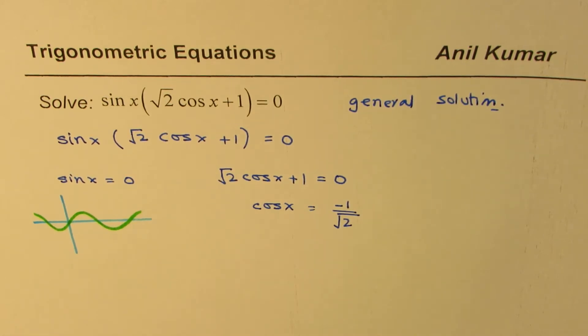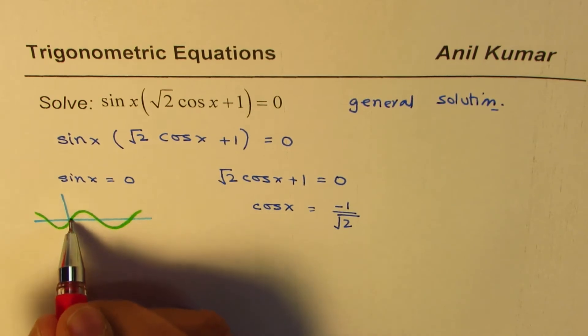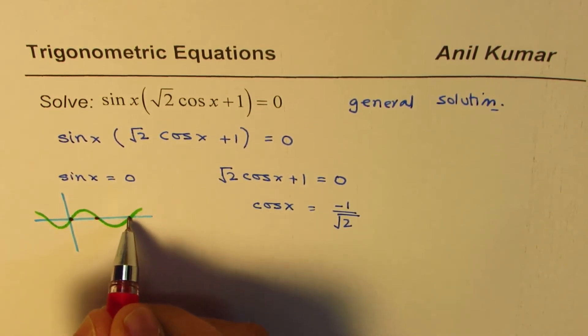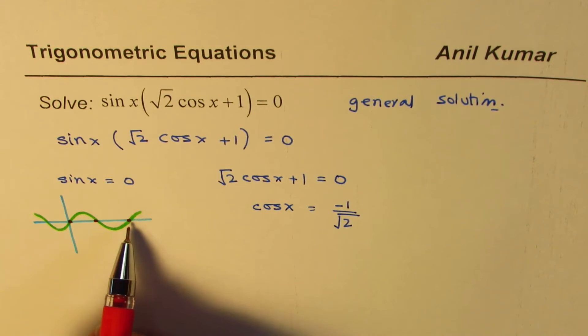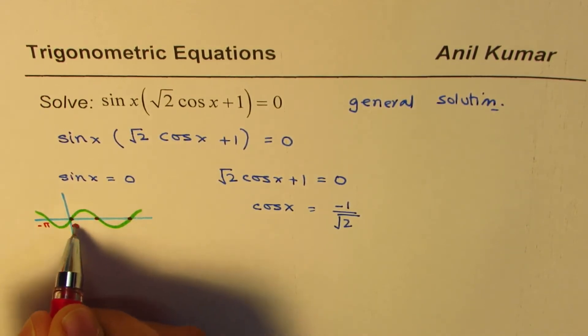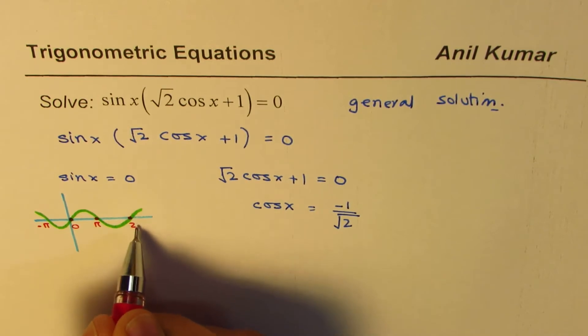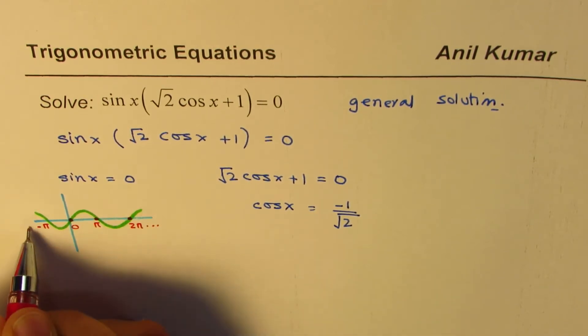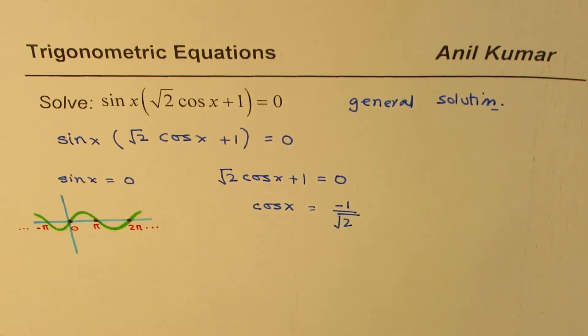Now as you can see, within 0 to 2 pi, it has three zeros: 0, pi, 2 pi. It also has zeros at minus pi. So the zeros are like this, right? So those are the zeros for sin x equals to 0.